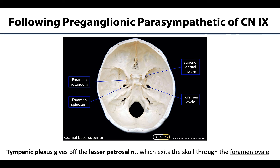Let's locate the foramen ovale and think about why we already know it. Something much larger must traverse this foramen to necessitate such a large opening — and hopefully you recall that the mandibular nerve, or V3, also exits the skull via the foramen ovale. This geographical relationship between those preganglionic parasympathetic fibers and V3 is going to be important.